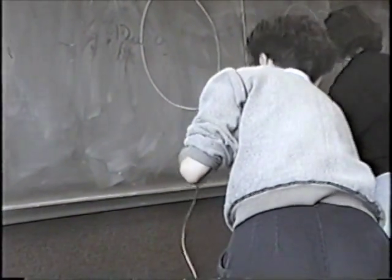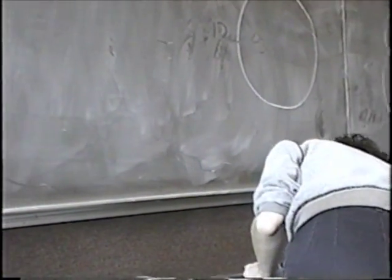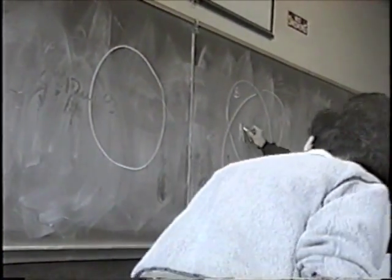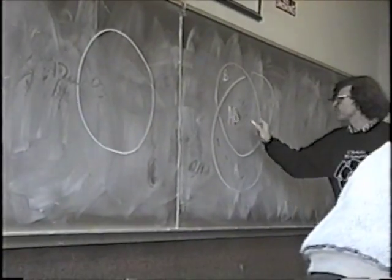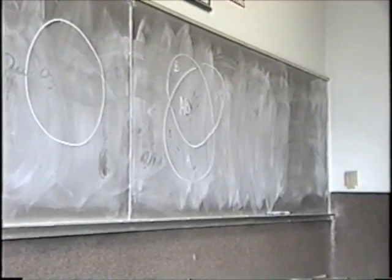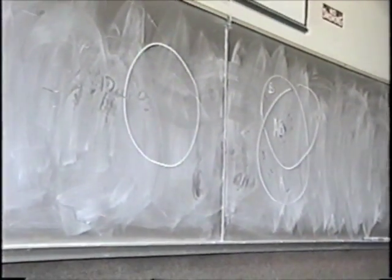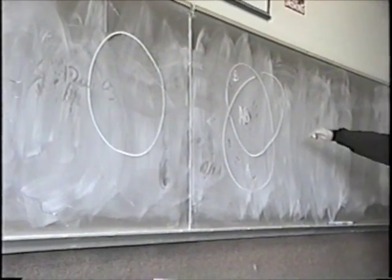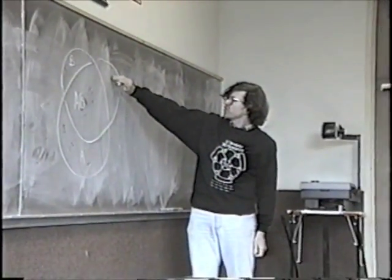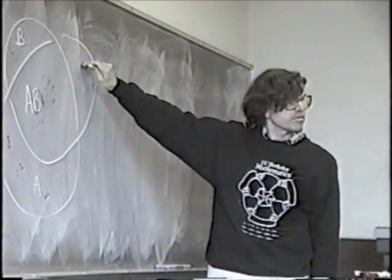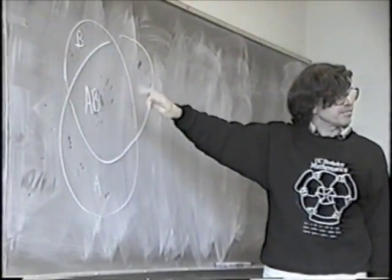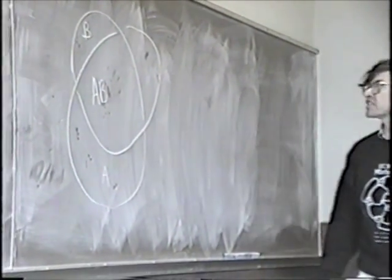In other words, this middle door I can call AB — this middle portal I can call AB. Now using this, I can find a way to achieve the result of going through this upper right place by a combination of the other things.